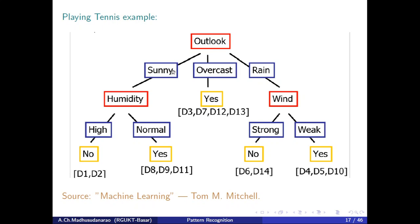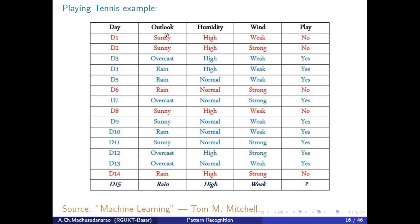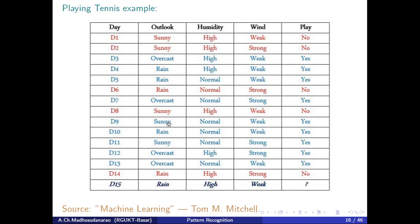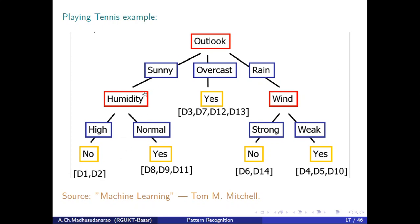If the outlook is sunny, looking at the sunny cases, there is a combination — sometimes I will play, sometimes I won't. To get a pure class, I need one more feature: humidity. If humidity is high, I won't play; if humidity is normal, I will play. When sunny and humidity is normal, I play; when sunny and humidity is high, I don't play.